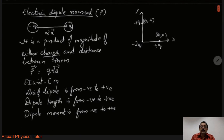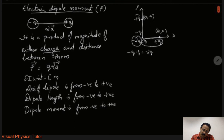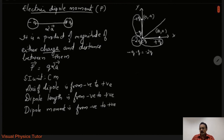First, we check for a dipole. A dipole runs from minus Q to plus Q. Here we have minus 2Q, so we split it into two charges: minus Q and minus Q (since minus Q + minus Q = minus 2Q). Now this first pair forms one electric dipole, and similarly the second pair also forms an electric dipole. Both dipoles are perpendicular to each other.